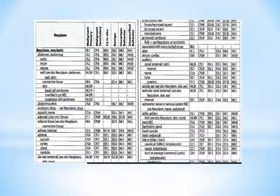After the neoplasm heading, you can see six column headings. What are they? Malignant primary, malignant secondary, CA in situ (that is carcinoma in situ), benign, uncertain behavior, and unspecified behavior. These are all different types of neoplasms.